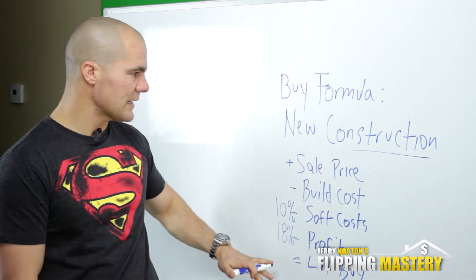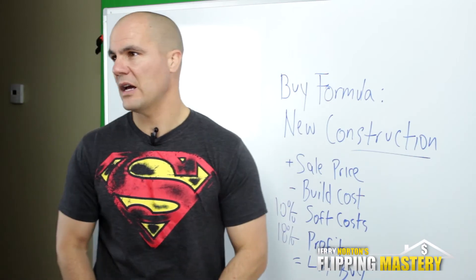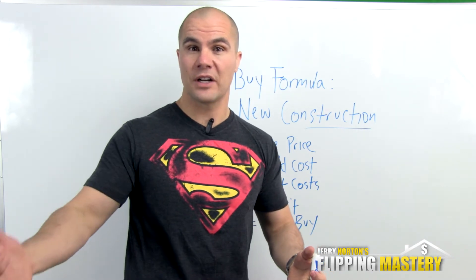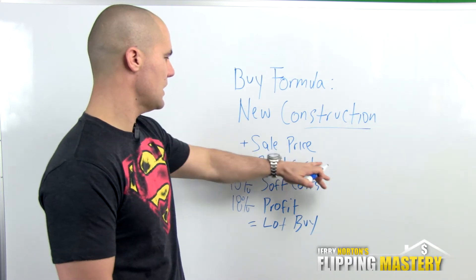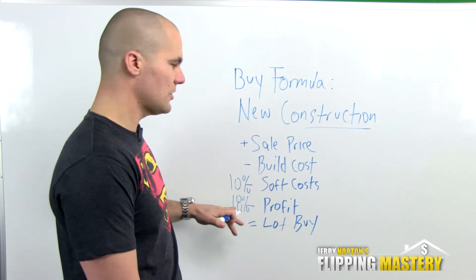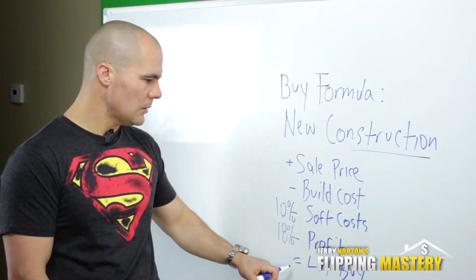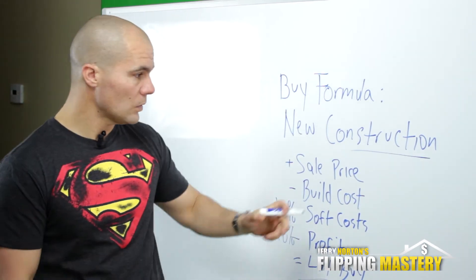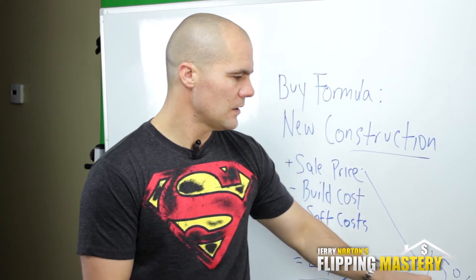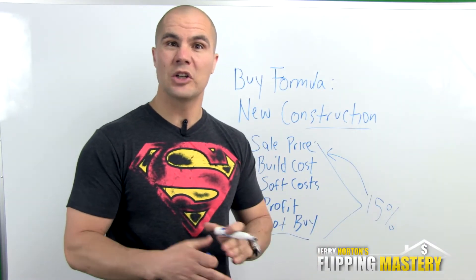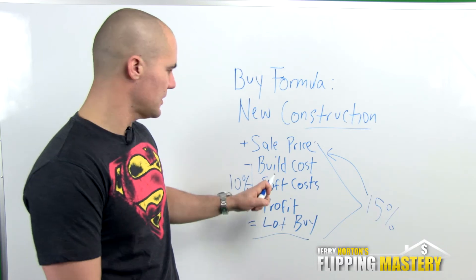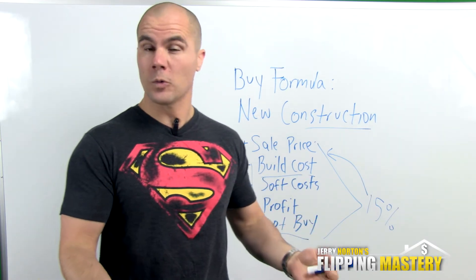Then you get down to your lot buy — once you subtract out everything, what price should you buy that lot for? Just like with houses, we use a formula to determine what we need to buy the property for so we can make an offer. We start with the sale price, factor in build cost and soft costs, subtract our profit, and what's left is our lot buy. As a general rule of thumb, if you can get the lot for about 15% of the sale price, that's a really good quick indicator the numbers will pencil out.